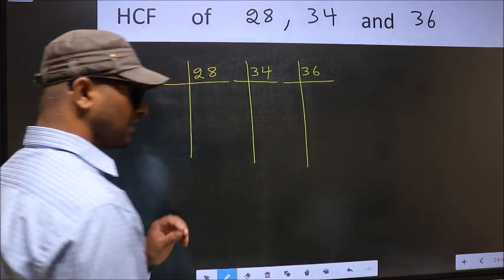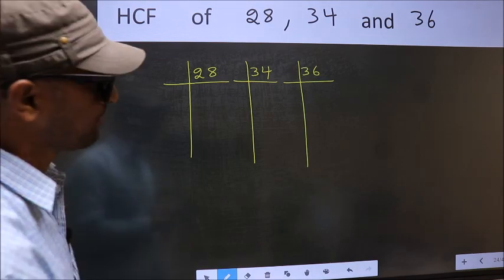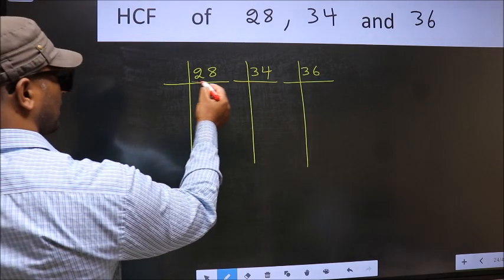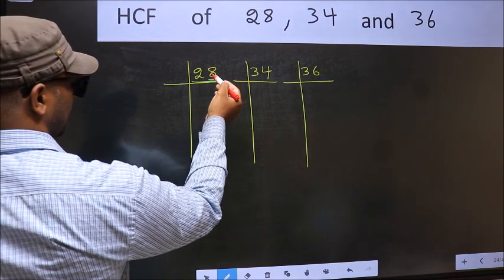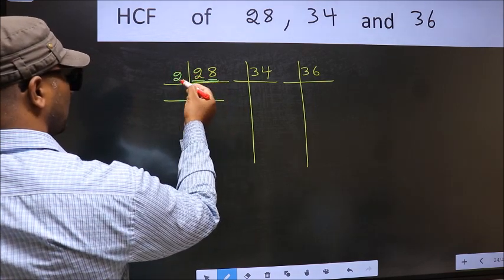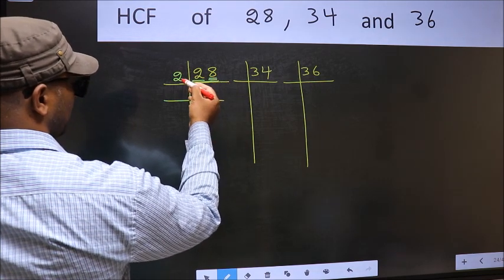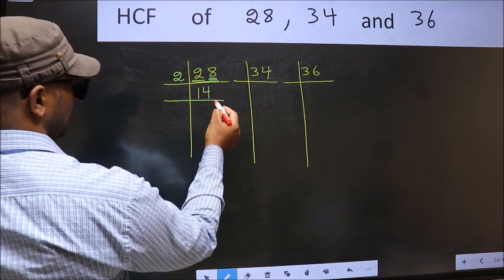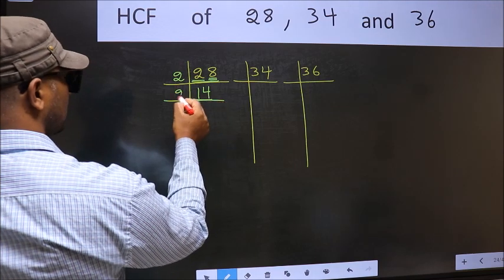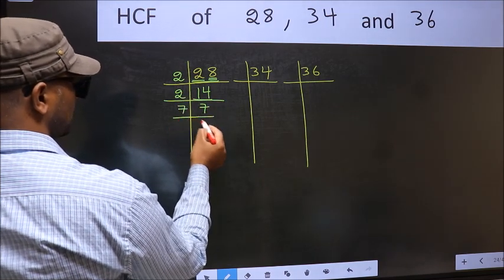This is your step 1. Next, in this number, last digit 8 is even, so take 2. First number 2, when do we get 2 in 2 table? 2, 1, 2. The other number 8, when do we get 8 in 2 table? 2, 4, 8. Now 14 is 2, 7, 14. 7 is a prime number, so 7, 1, 7.